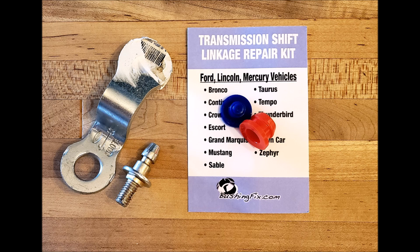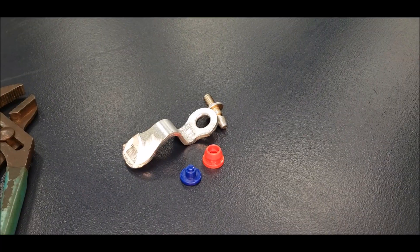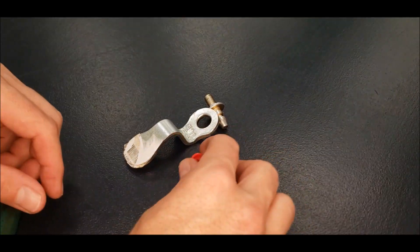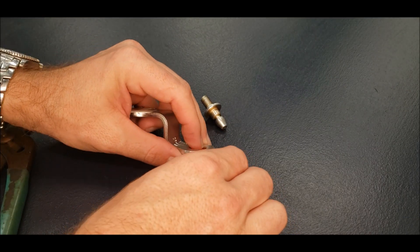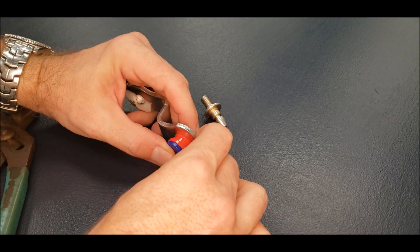In this video we have the shift lever removed from the vehicle, which is easier to do. It only goes back on one of two ways, so just make a note of which way it came off. We have the shift pin removed also, but you don't need to do that.